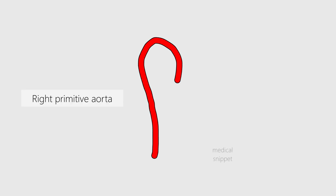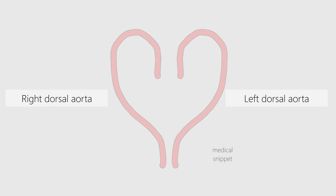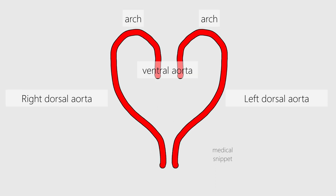In this video, we will discuss the aortic arches. The embryo has two primitive aortae, right and the left. This is how they look when seen from the side. Each primitive aorta has three parts: the ventral aorta, the dorsal aorta, and the part connecting both is the arch. Now let's visualize the primitive aorta from the front — this is how it looks.